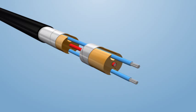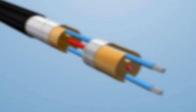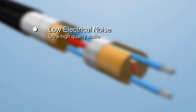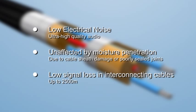Another key feature of the Vibratec 3G is its low impedance design. The advantages of this are low electrical noise, giving ultra-high quality audio signals allowing accurate and unambiguous verification of hostile activity; unaffected by moisture penetration, which can occur due to cable sheath damage or poorly sealed joints and terminations; and no significant signal loss occurs in interconnecting cables.